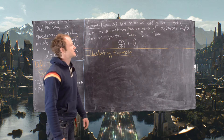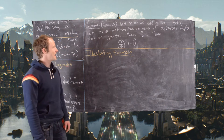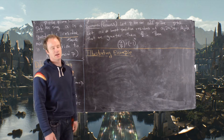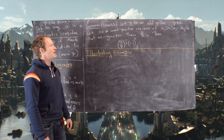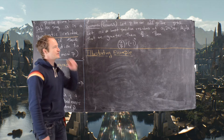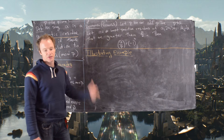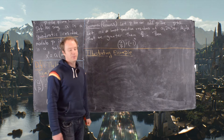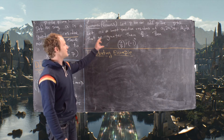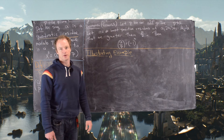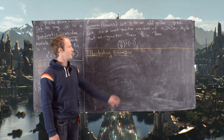Gauss's Lemma says the following. If you have an odd prime and the prime does not divide a, then let n be the number of least positive residues of the list a, 2 times a, 3 times a, up to (p-1)/2 times a, that are bigger than p/2. It's a little technical, which is why we're going to do an example before the proof.